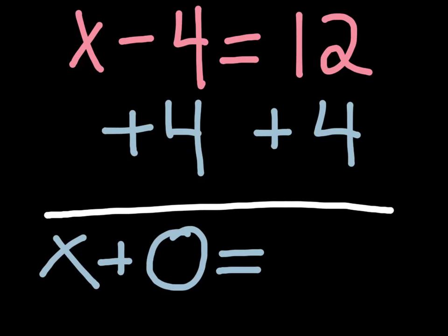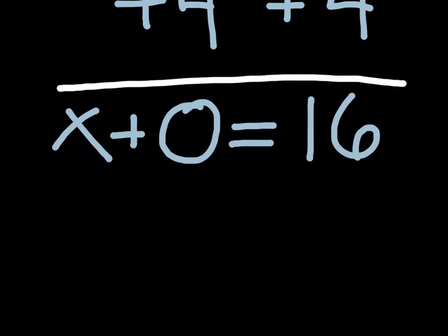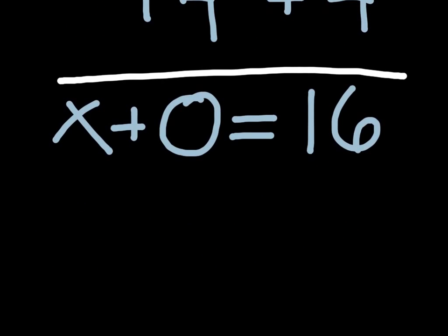And then on the right side of the equation, I have 12 plus 4, and I can rewrite that as 16. I can further simplify my equation by simply writing it as x equals 16.